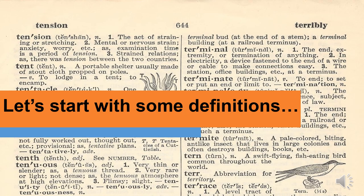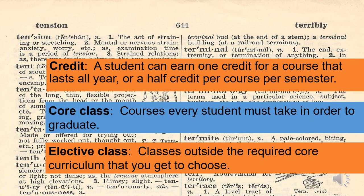Now for some definitions. As we move through the presentation, it's going to be important for you to understand what a credit is and the difference between a core class and an elective class. A credit is where a student can earn one credit for a course that lasts all year or half a credit per course per semester. A core class is a class which a student must take in order to graduate — for example, English. An elective class is classes outside the required core curriculum that you get to choose for fun.